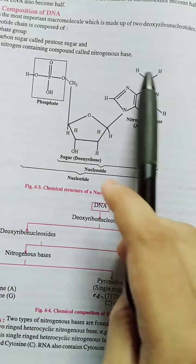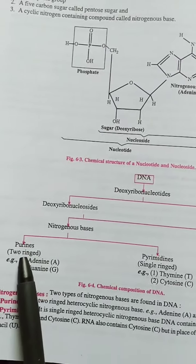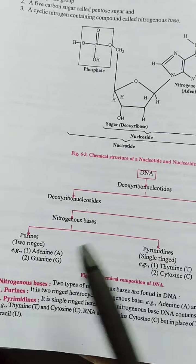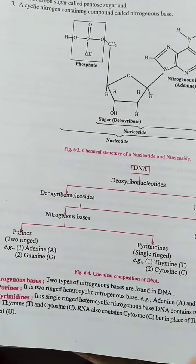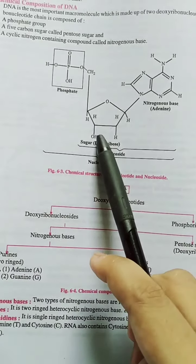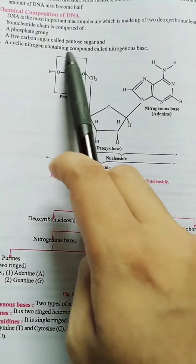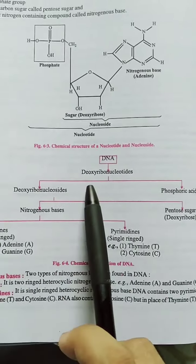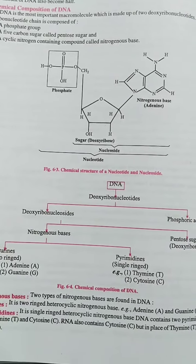These are the nitrogen bases. Nitrogen bases are broadly of two types. In case of purines, there are two types: adenine and guanine. For pyrimidines: thymine and cytosine. The deoxyribose sugar with nitrogen bases forms nucleosides. While if there is a presence of a phosphate group, it will be known as a nucleotide. So what is DNA? DNA is nothing but a chain of nucleotides.